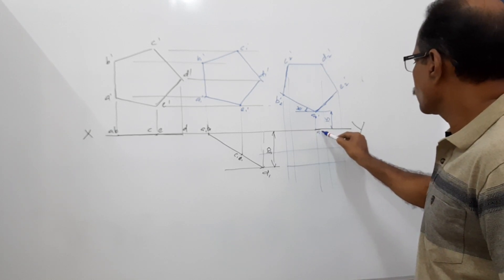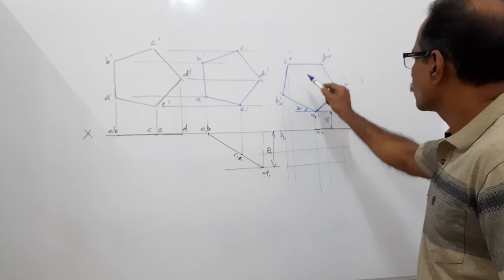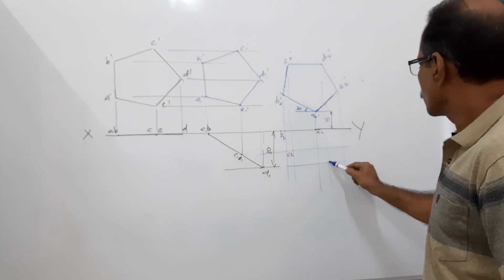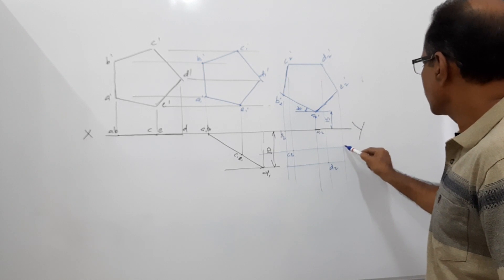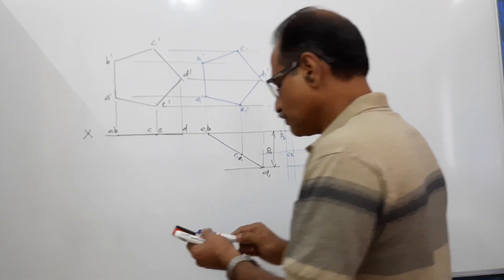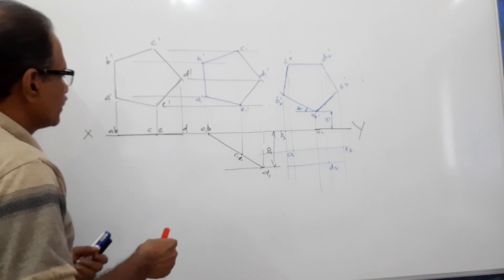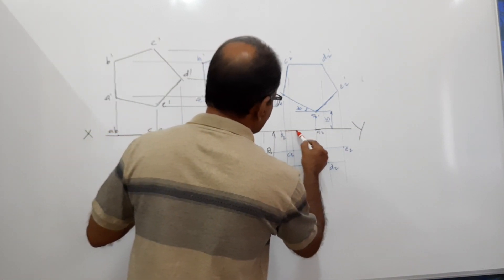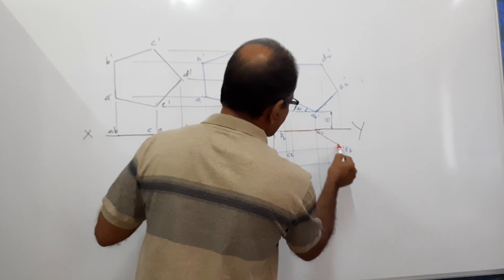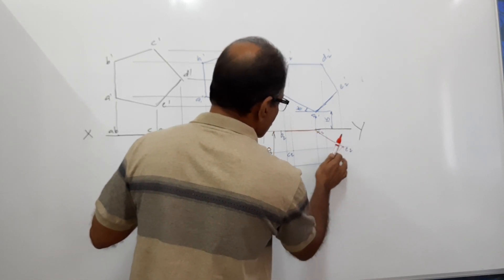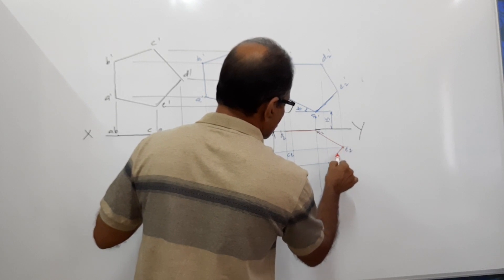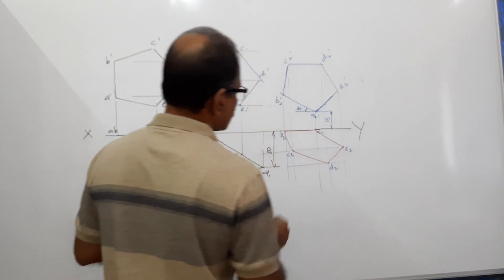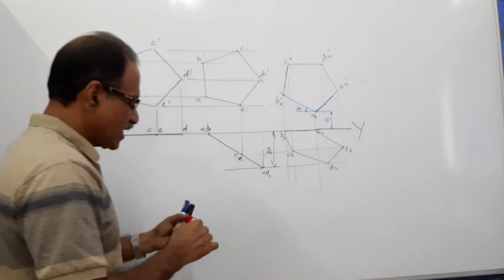A2, B2, C2, D2, and E2. Connect them. A2, B2, C2, D2, E2. That's the final plan.